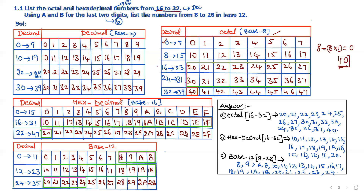Now for the decimal to hexadecimal number system, the hexadecimal base or radix is 16. That means the total hexadecimal digits should be 0 to 9 and A to F. With these digits we can write any decimal value. The first sequence of numbers from 0 to 15 in decimal corresponds to 0 to 9 in hex, and then from 10 to 15 we replace with A to F.